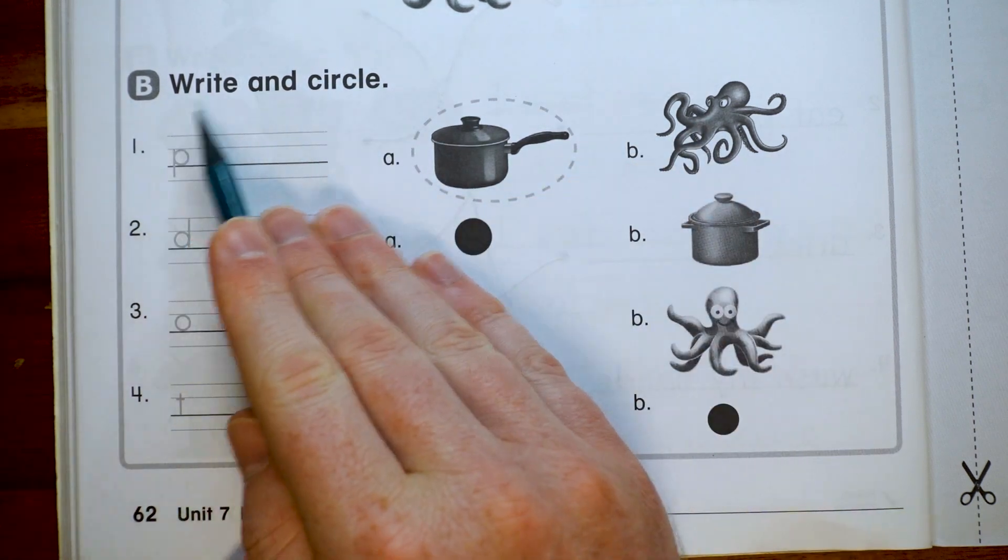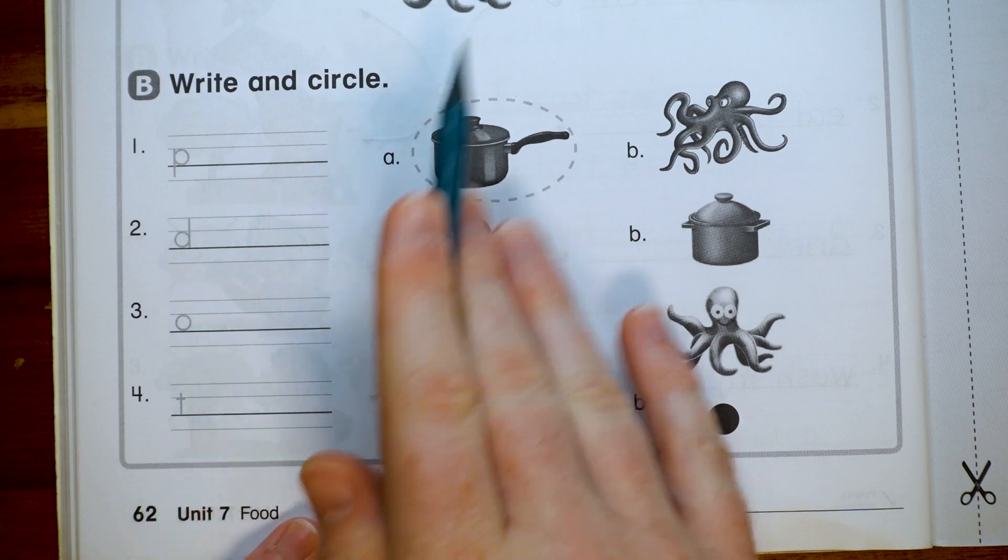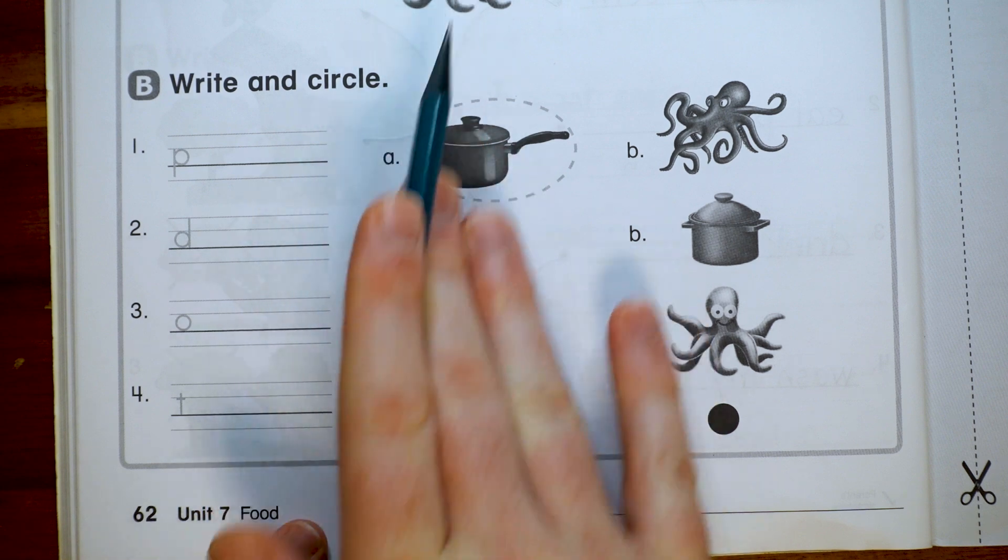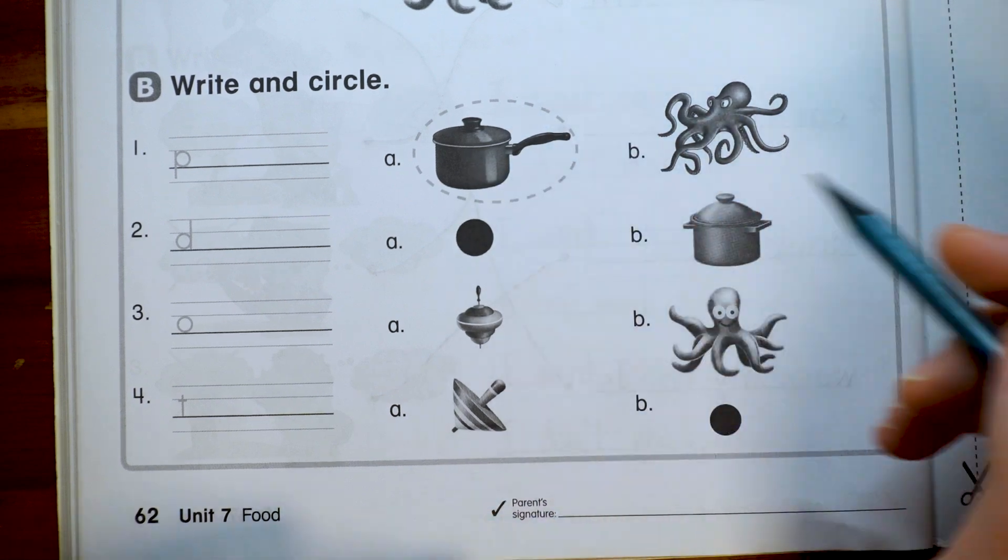This is part B and it says write and circle. So we're going to take the same words we just used in part A and we're going to write them here and then just circle the picture that's right.